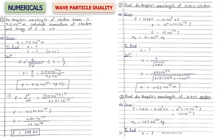First numerical: de Broglie wavelength of an electron beam is given; calculate momentum and energy of the electron in electron volts. Lambda is given, so use λ = h/p to find momentum p. Then use E = p²/2m to find energy. You will get energy in joules; divide by 1.6 × 10⁻¹⁹ to convert to electron volts.